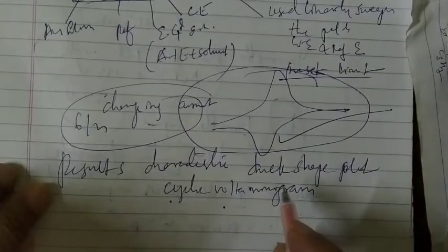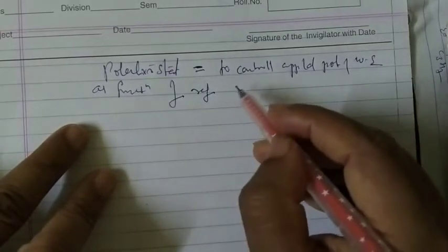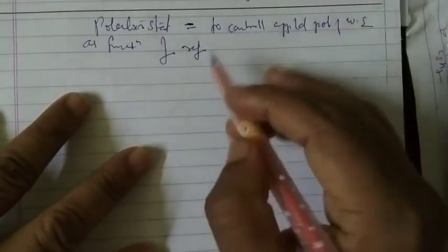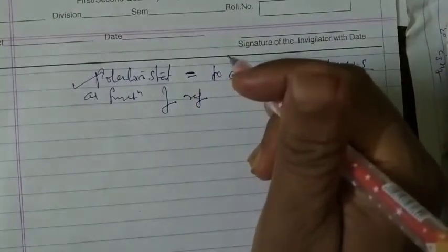Choosing and polishing the electrode is very important. The potentiostat is used to control the applied potential of the working electrode as a function of the reference electrode potential. The working electrode is composed of a redox-inert material, and its potential range is selected based on the experiment.